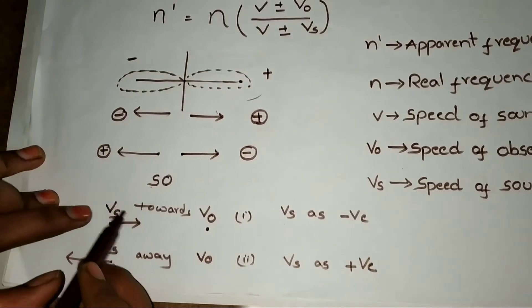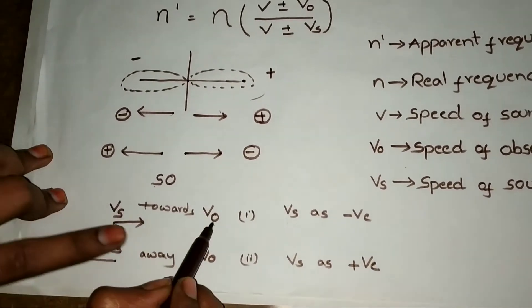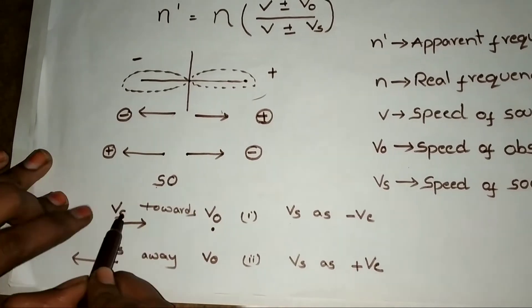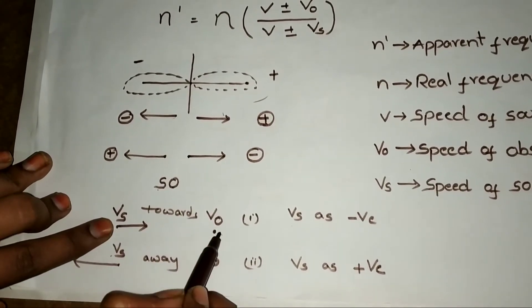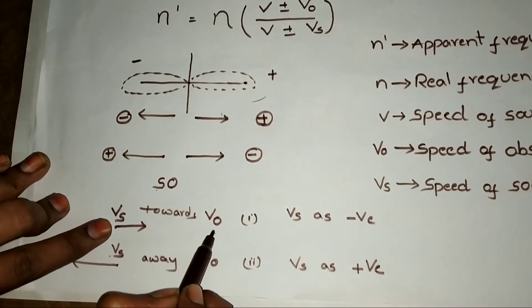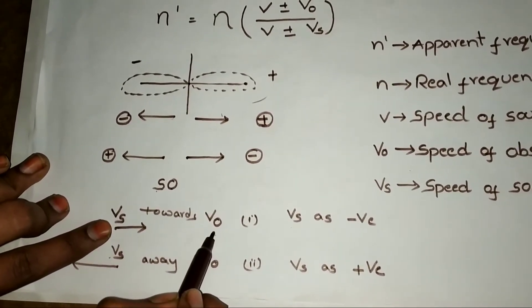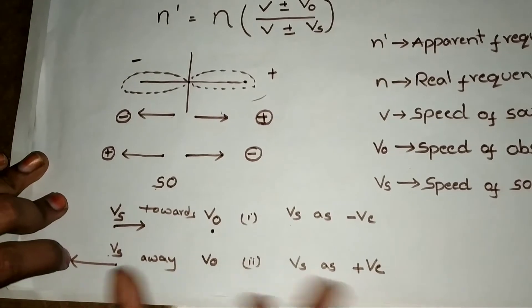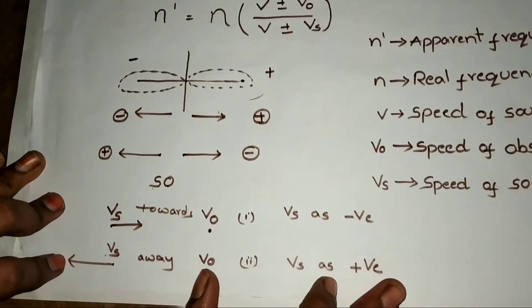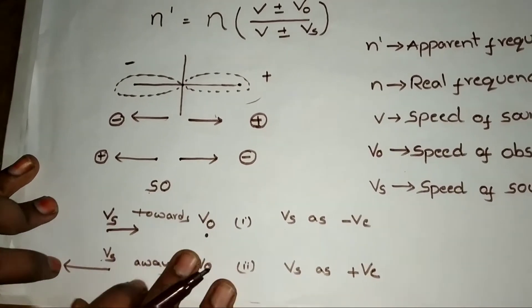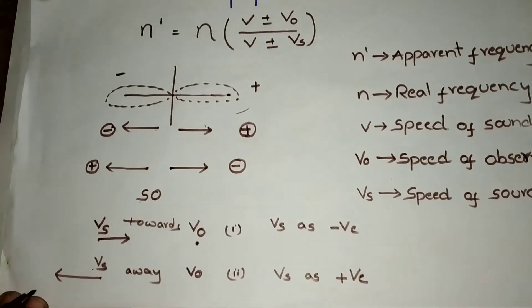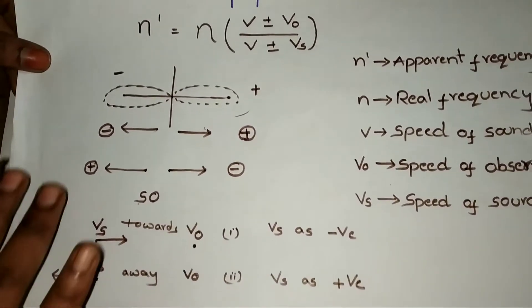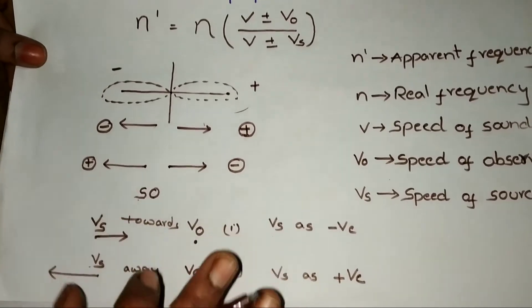The same logic applies when the velocity of source is at rest and velocity of observer is moving. In this way you have to apply the trick. Now let me apply this trick to the formulas.